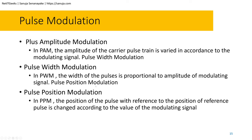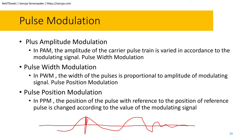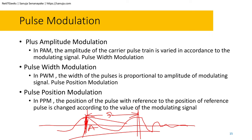In pulse position modulation (PPM), the position of the pulse with reference to the position of the reference pulses changes according to the value of the modulating signal. To clarify — amplitude is how high the signal goes, and frequency is how often the wave repeats. These are basic background concepts. So PAM looks at the amplitude of the carrier pulse train, PWM looks at the width of the pulse proportional to the amplitude, and PPM changes the position of the pulse.